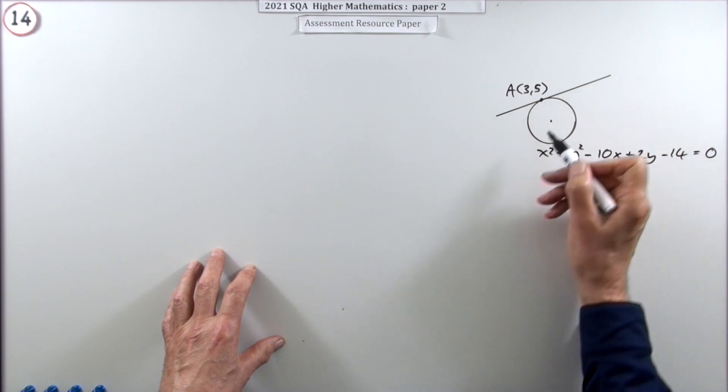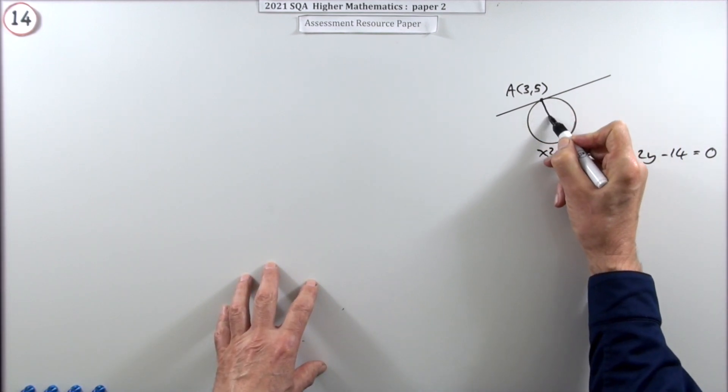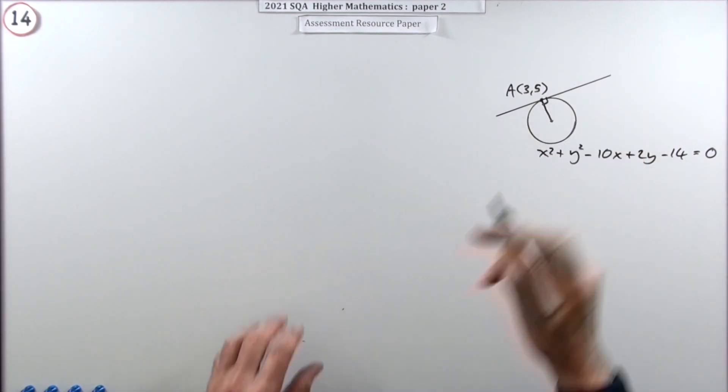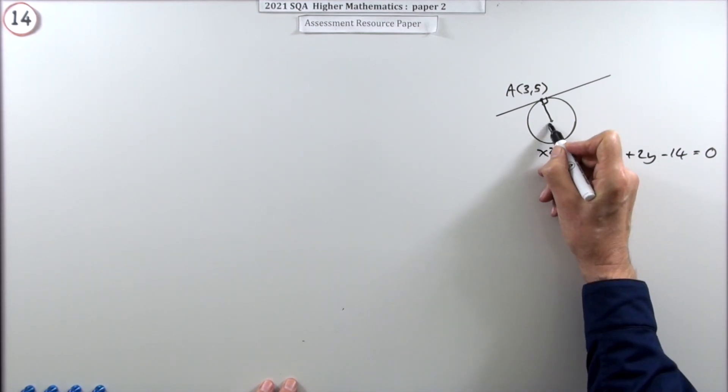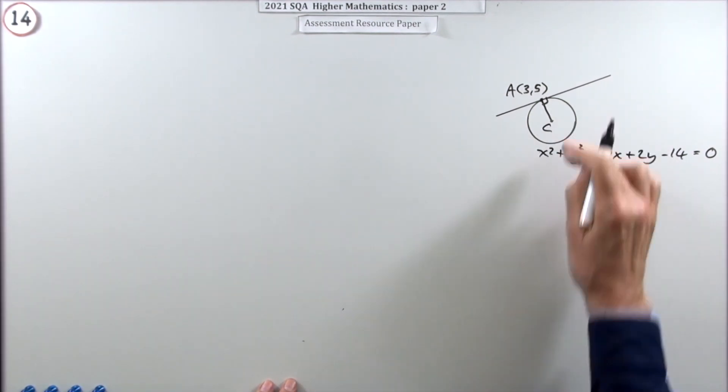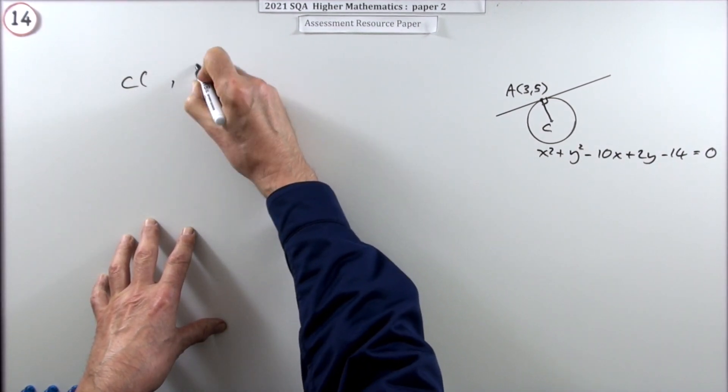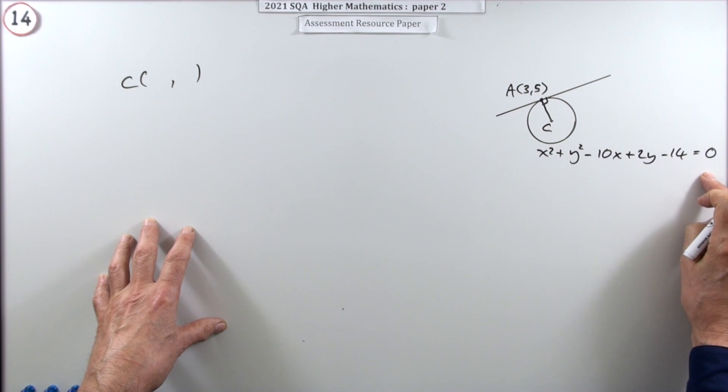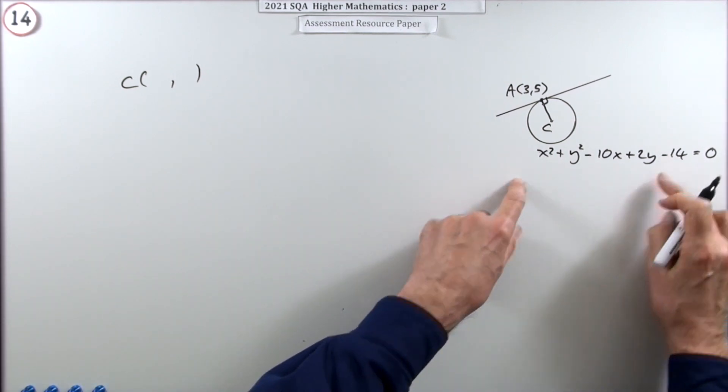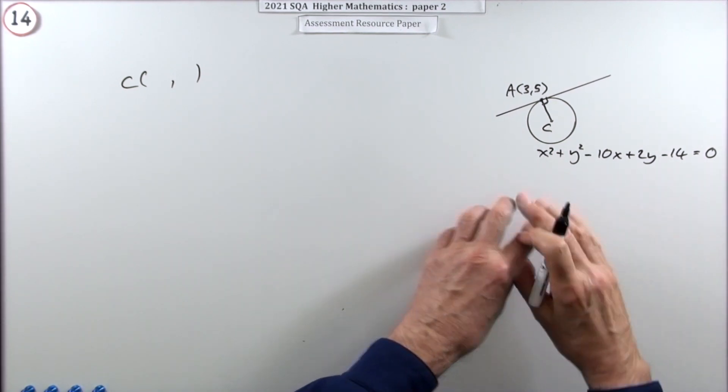You get its gradient by the fact that the tangent is always perpendicular to the radius at that point. For that, I'll need the coordinates of the center of the circle. You can extract them straight from this equation, because that equation was just the basic squared equation multiplied out.